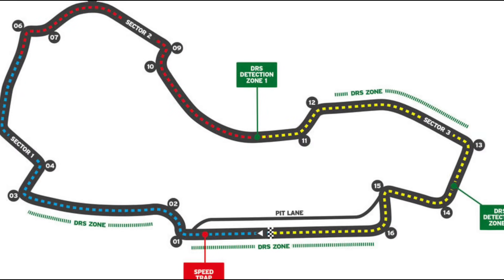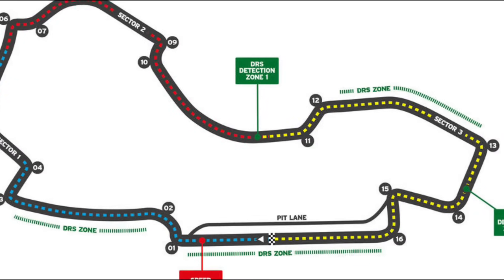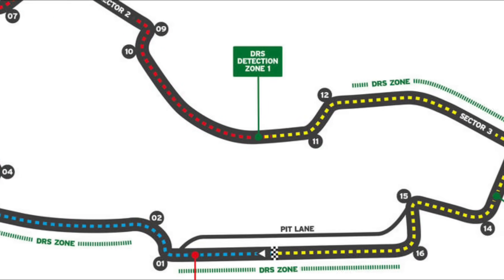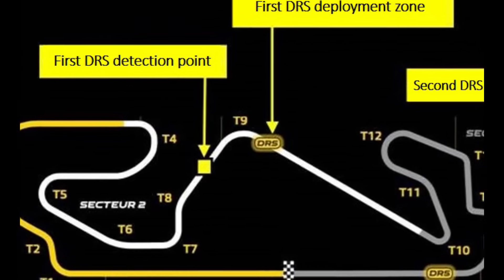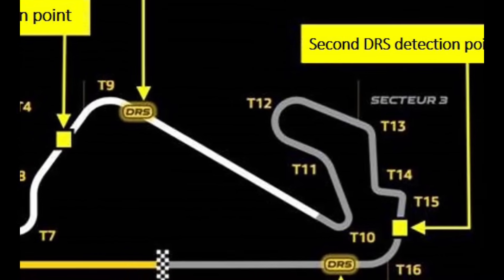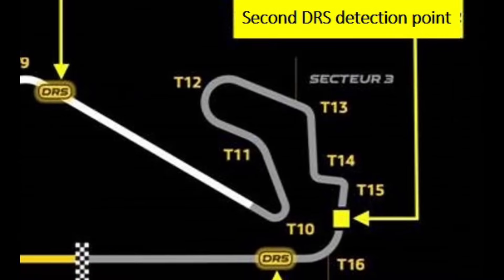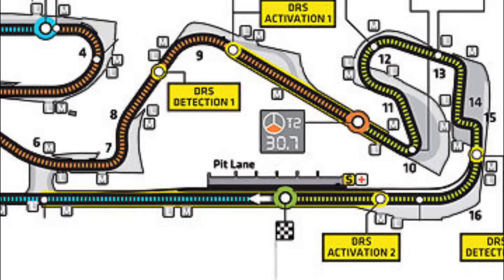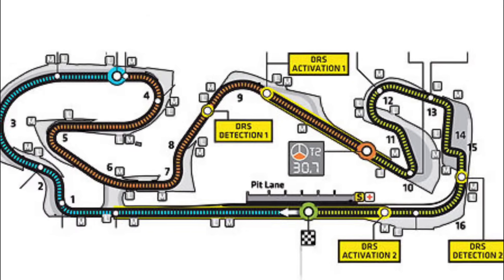There is a line on the track to show the area where the one second proximity is being detected — this is known as the DRS detection point. A later line on the track, known as the activation point, shows when DRS can be enabled. There's also a sign on the track marked DRS where the DRS zone begins.